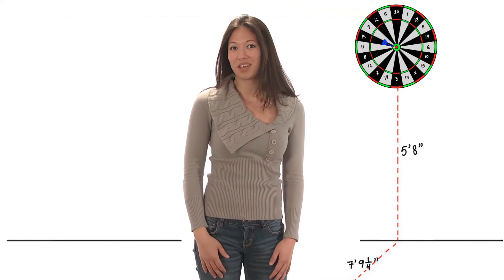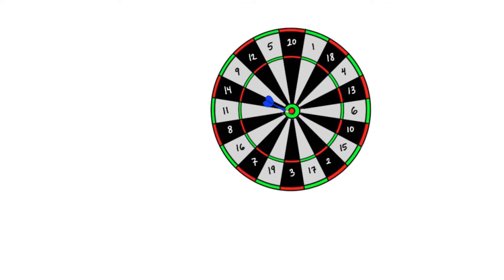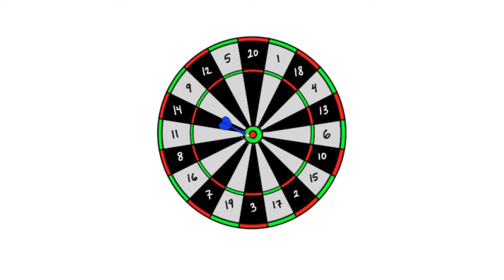But it's also more likely we hit them by chance. Smaller targets are harder to hit. But when we hit them, we can be more confident we didn't hit them by chance.